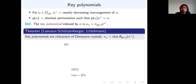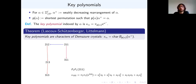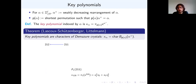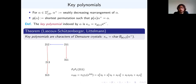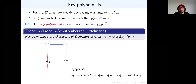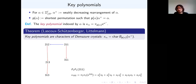On the level of characters, what you get are called key polynomials. Taking the characters of these Demazure crystals gives key polynomials — equivalently, these are what you get by applying Demazure operators to a dominant monomial. The weight of the lowest weight element of each Demazure crystal gives the indexing for the key polynomial; for example, weight (1,0,2) indexes one key polynomial. This is just the character version of what we saw with the Demazure crystals.